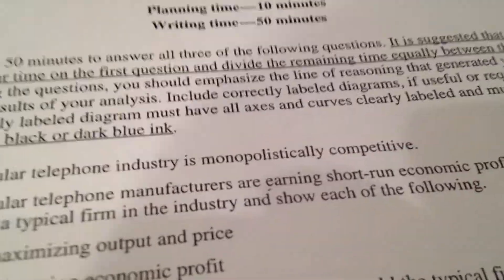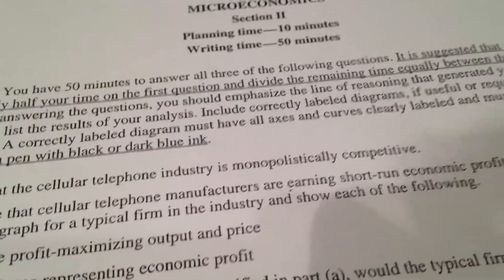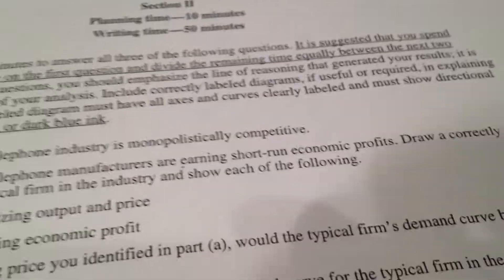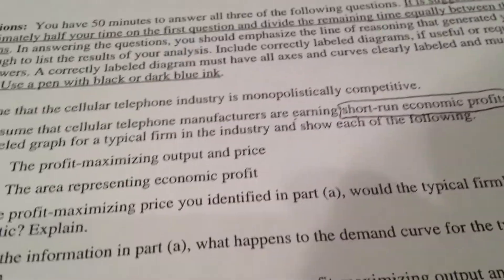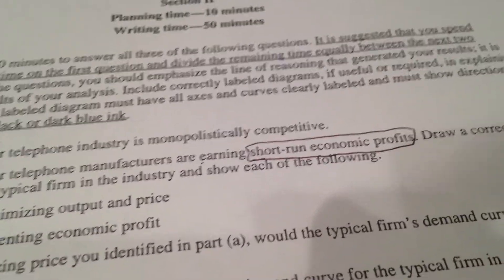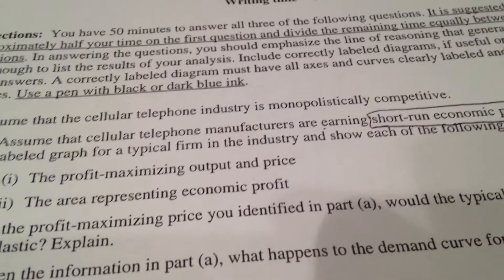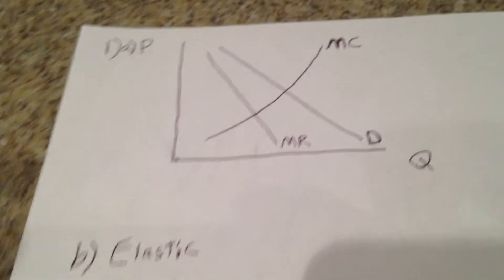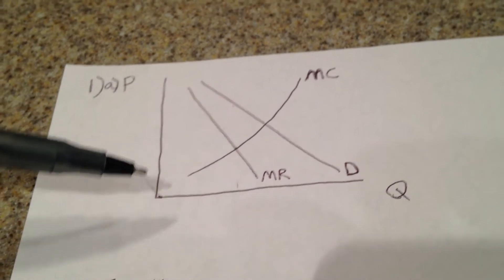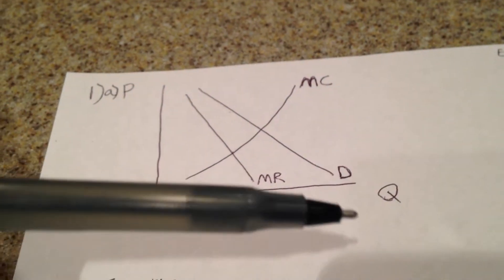First, we have to assume that the cellular telephone industry is monopolistically competitive. For part A, we need to assume that these manufacturers are earning short-run economic profits. This will be important. We need to draw a correctly labeled graph for a typical firm in the industry. Here I have a partially pre-drawn graph where it shows the price column or the axis in the Y and the quantity on the X-axis.